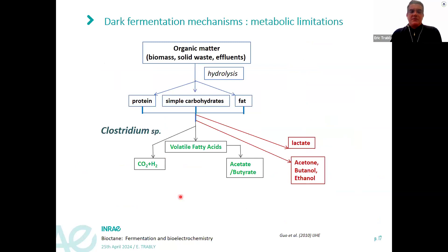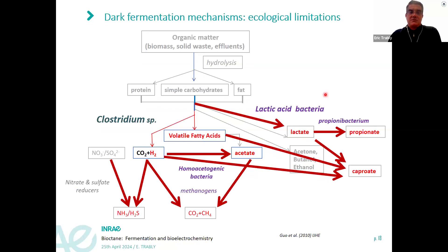In dark fermentation, we have few operating conditions that can be controlled: hydraulic retention time, pH, temperature, and the microbial community. The main microbes producing hydrogen and molecules like acetate and butyrate are Clostridian species, and they have metabolic limitations. With waste, we also have ecological limitations — we must deal with different types of microorganisms that can produce many different molecules. A key challenge in the BIOCTANE project is to convert carbohydrates toward propionate and avoid side reactions.